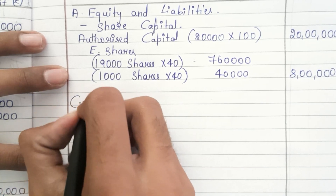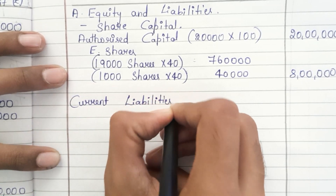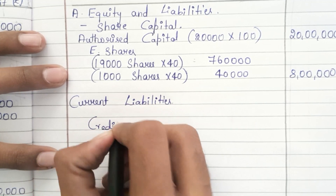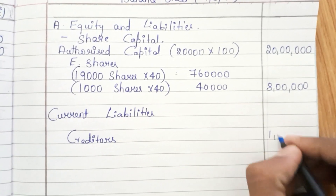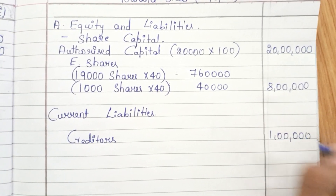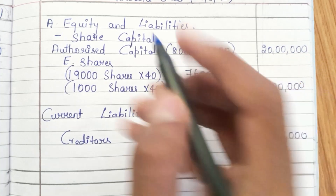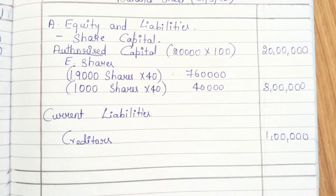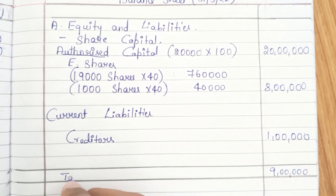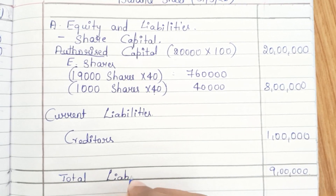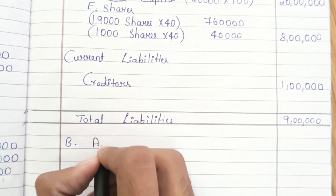There is no reserve and surplus in this problem. Under current liabilities, we have creditors — no additional information is given, so write that amount directly as ₹1 lakh. While adding, neglect the ₹20 lakh authorized share capital because that is only the maximum the company can issue. Add only ₹8 lakh and ₹1 lakh, which gives ₹9 lakh as total liabilities.